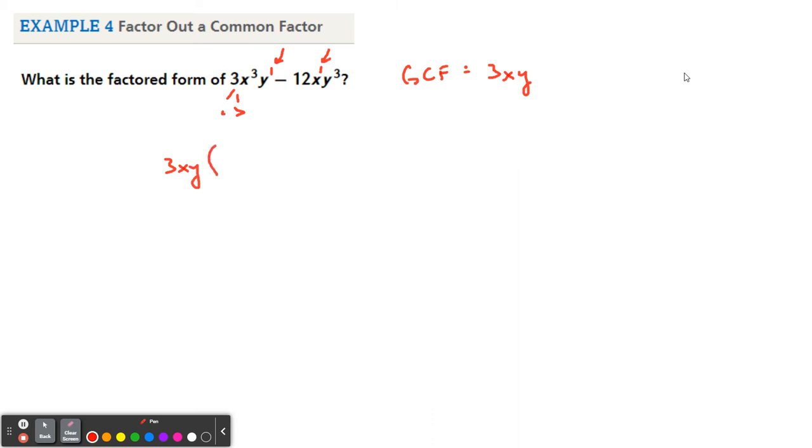All right, what's left over? Well, this 3 goes away, so there's no number. x cubed, take away an x, is x squared. I shouldn't say there's no number. There's a 1, but we're going to not write it. And then this y goes away. So x squared.